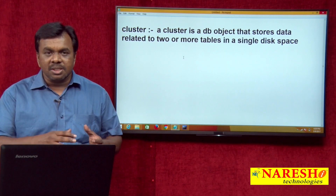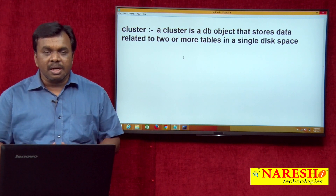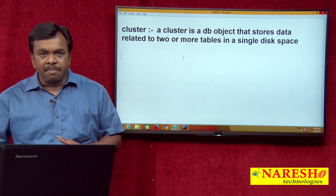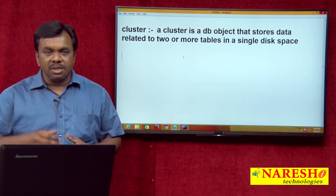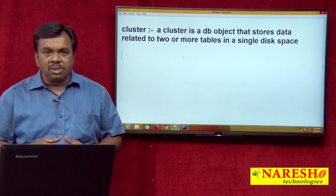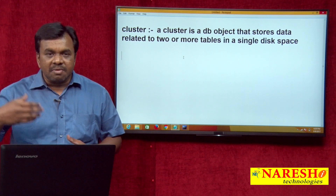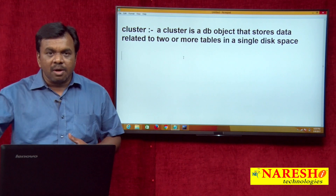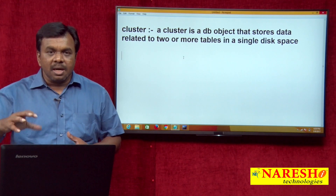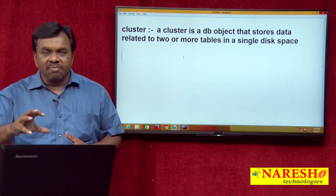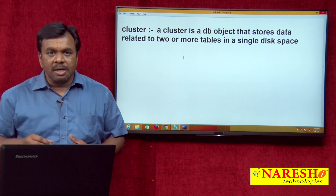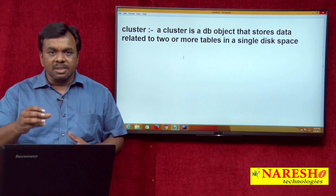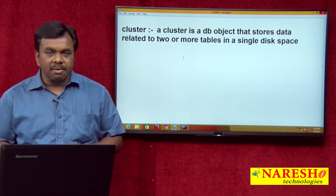Because EMP table data is stored in one memory location and department table data is stored in another memory location, it requires a number of I/O operations and switching from one memory location to another — this degrades performance.